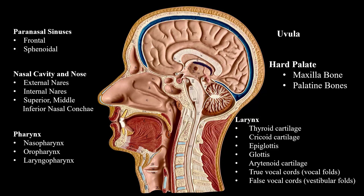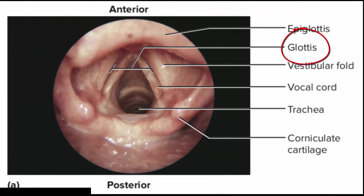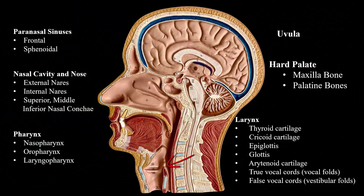Down here is the larynx, or voice box. We have the thyroid cartilage and the cricoid cartilage. Up here we have the epiglottis, which closes over as you swallow food to keep food from going down into the trachea and into the lungs. Then we have the glottis, which is the opening between the vocal cords. Here we have the arytenoid cartilage, the true vocal cords or vocal folds, and the false vocal cords or vestibular folds.